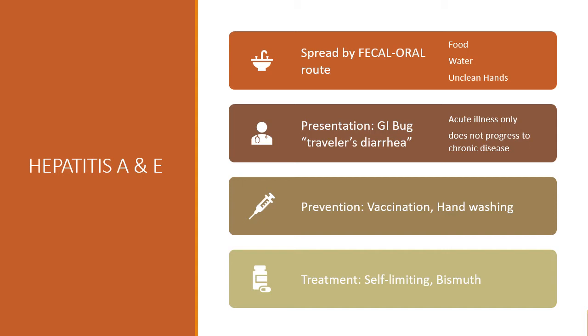The treatment for hepatitis A and E is minimal. It's self-limiting, but things like bismuth — Pepto-Bismol — can help.